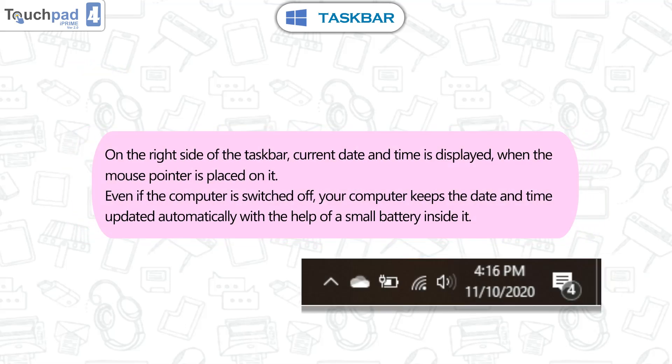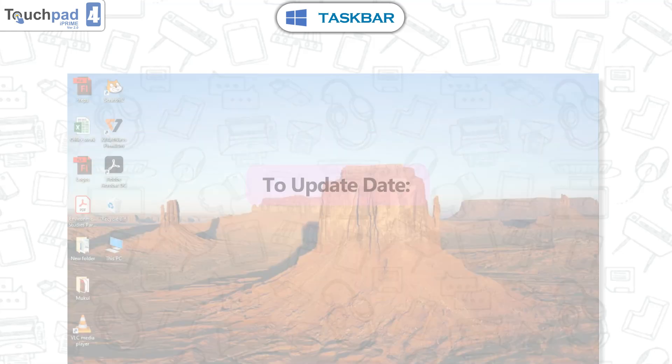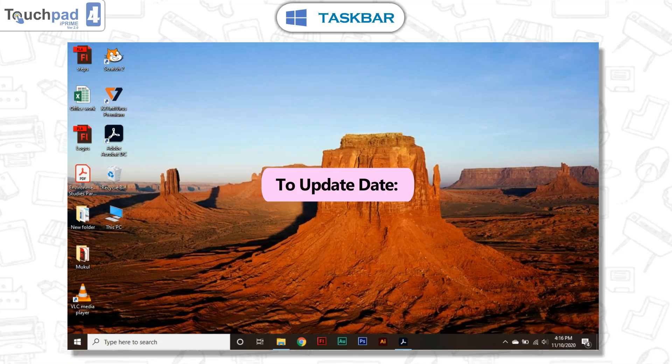Clock. On the right side of the taskbar, the current date and time is displayed when the mouse pointer is placed on it. Even if the computer is switched off, your computer keeps the date and time updated automatically with the help of a small battery inside it.